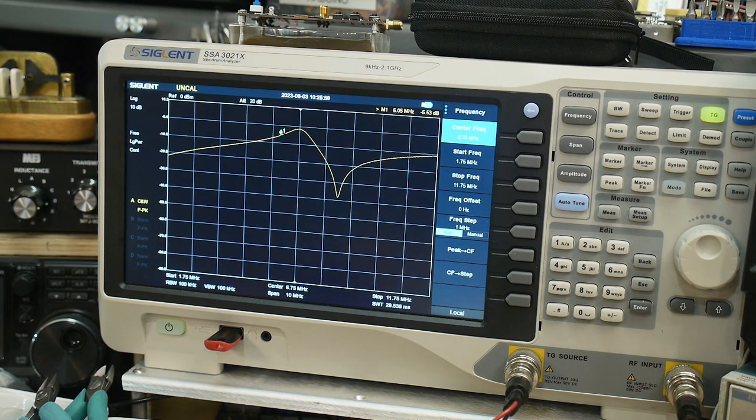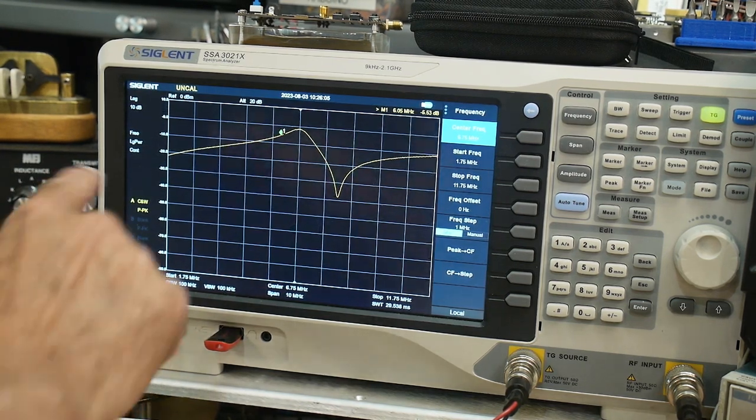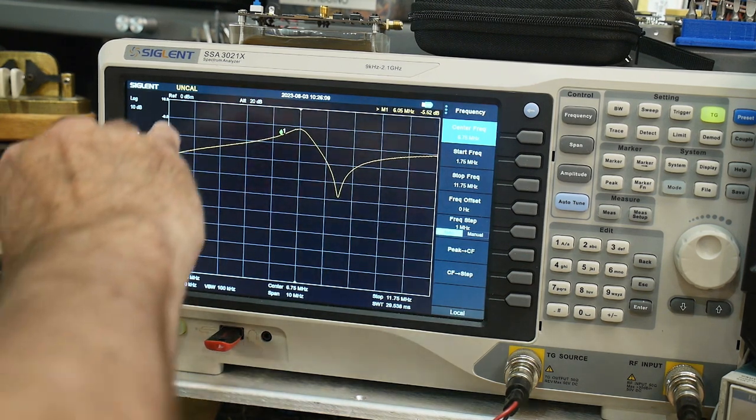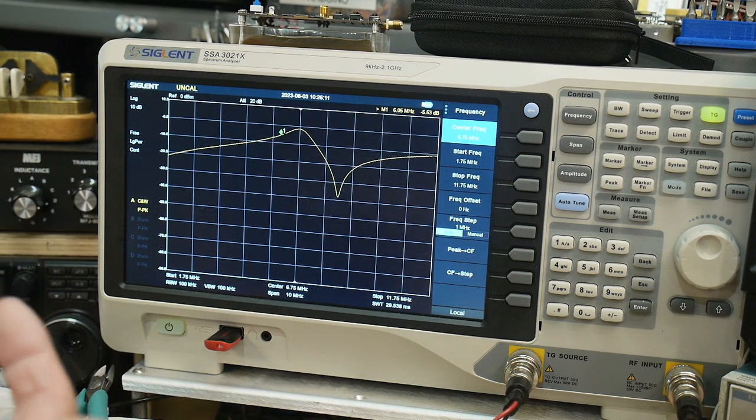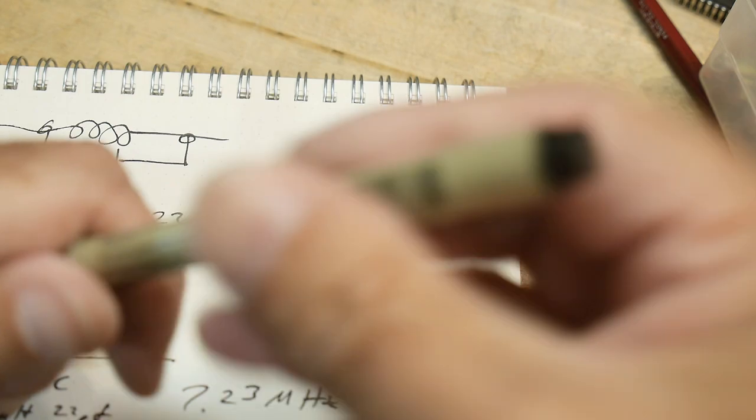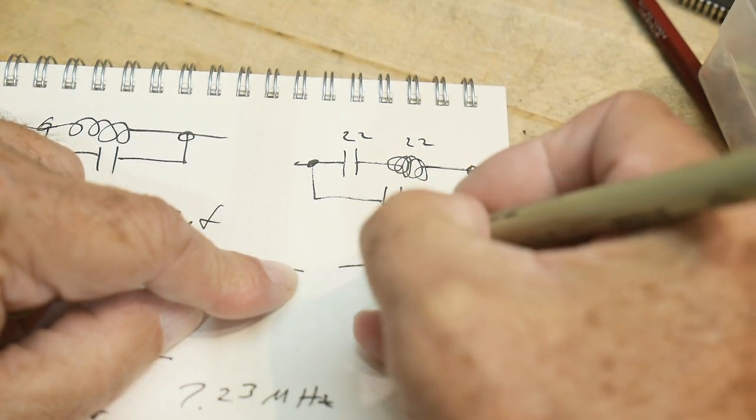Now, you can talk about a quantity called Q, like the letter Q, and that tells you how sharp these peaks are. This particular circuit has a very low Q because things are kind of broad, but you get the idea that this particular circuit here is acting just like a crystal would. You draw crystals like this.